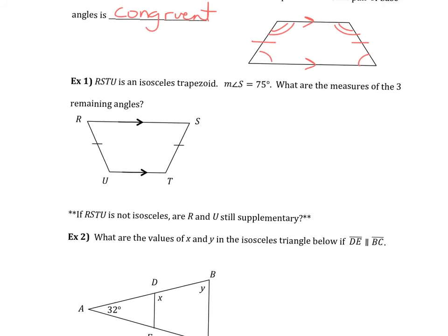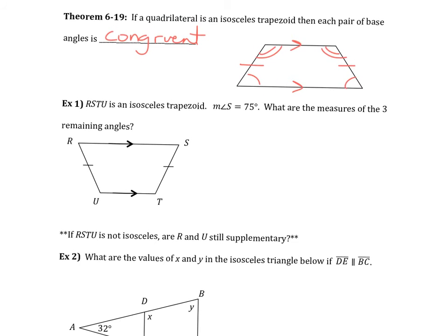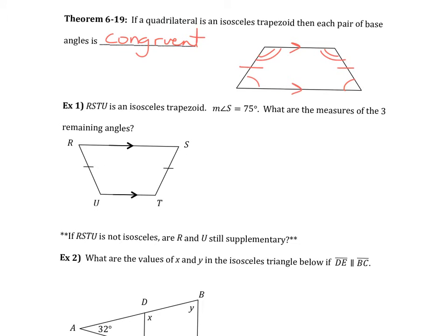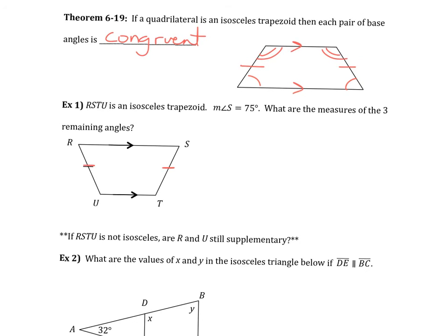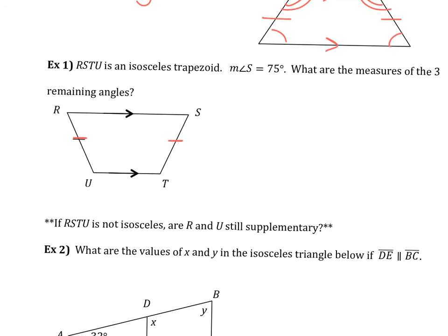Let's look at example one here. It says RSTU is an isosceles trapezoid. Note they marked that for you, congruent sides, parallel bases. And it says the measure of angle S is 75 degrees. So this angle right here is 75 degrees. What are the measures of the three remaining angles? So I feel like one of these comes pretty quick.